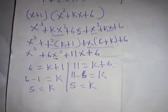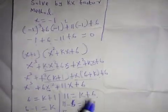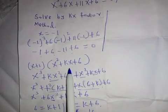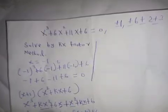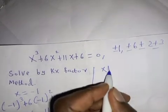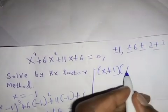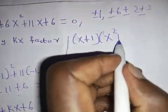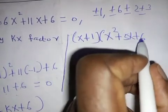Now that we have k equal to five, we substitute it back. Our equation becomes: x plus one, times bracket x squared plus five x plus six.